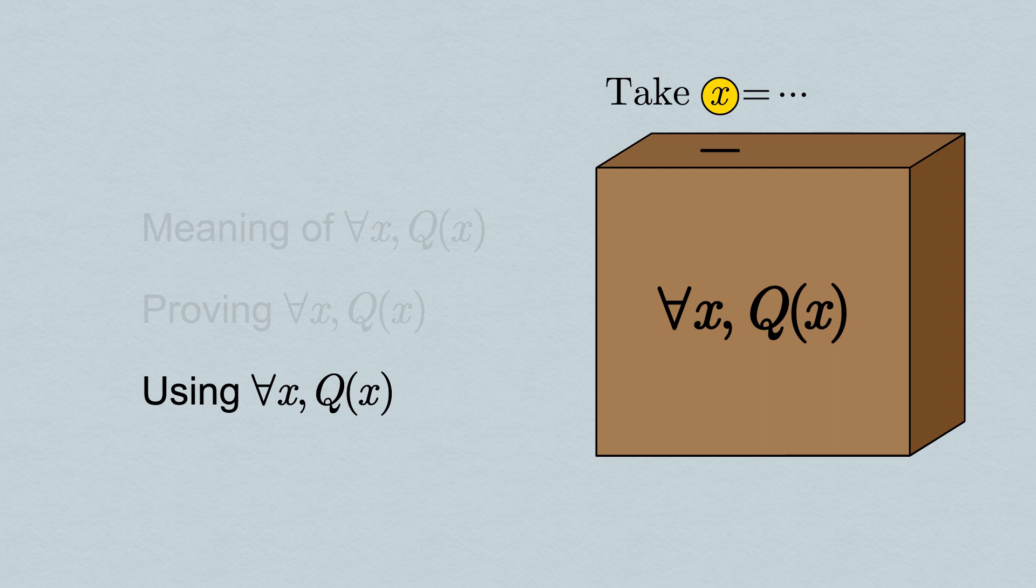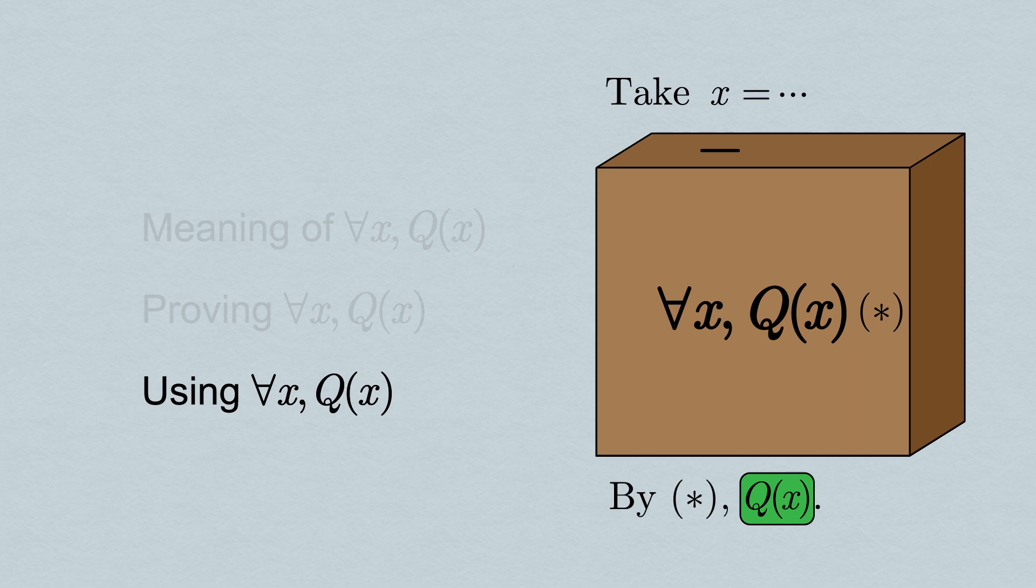Once we've declared the x we're using, we simply reference the statement that we know is true, which allows us to conclude that the statement Q(x) is true for our chosen x. If we mark the statement we're using, we can just say: by star, Q(x) is true.